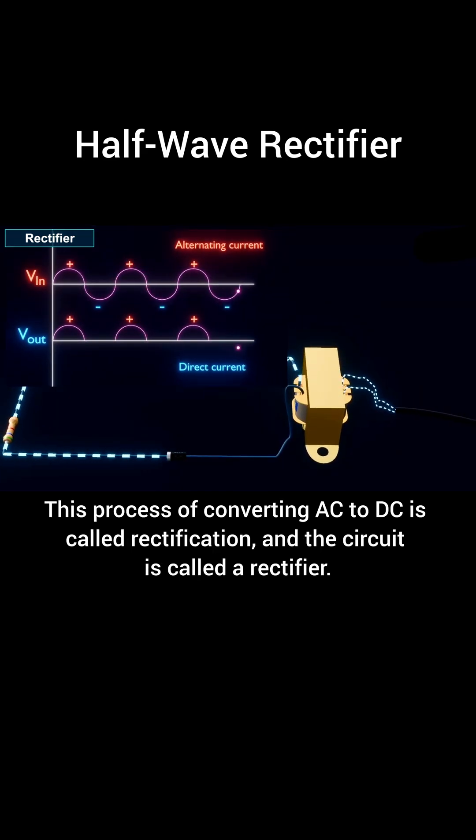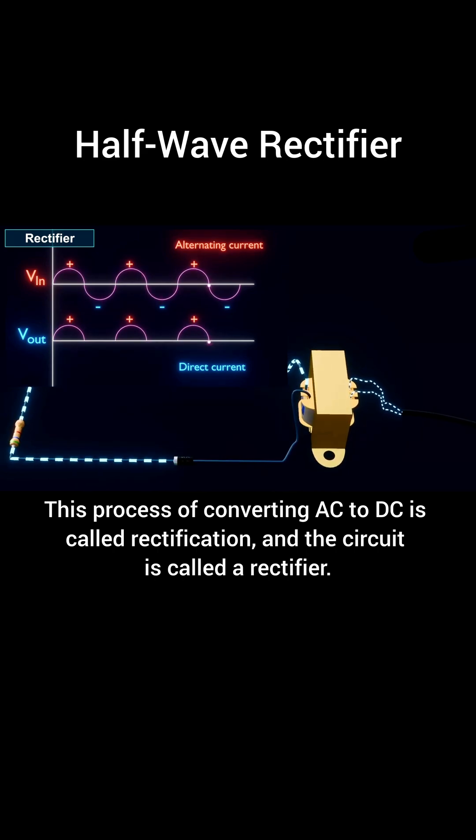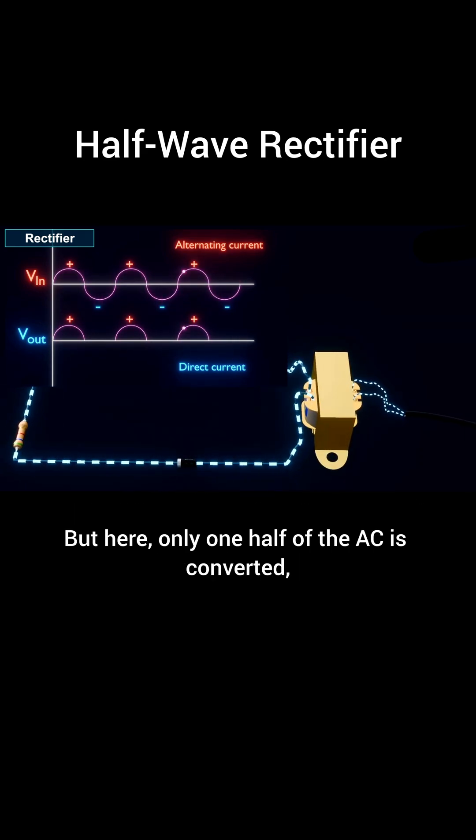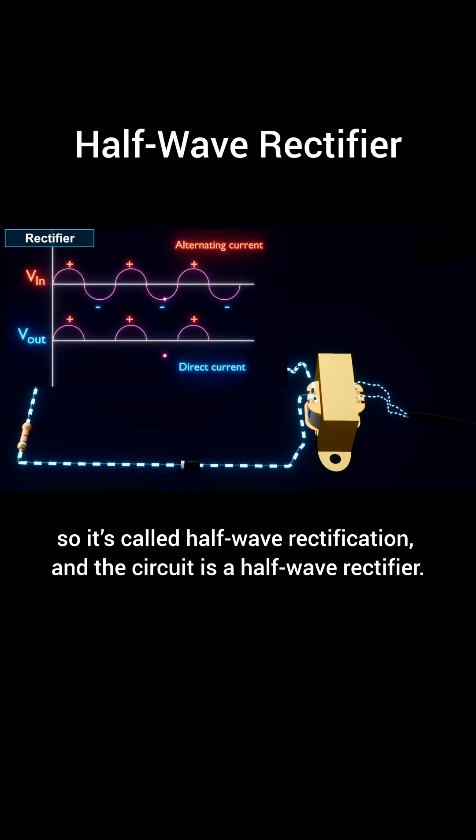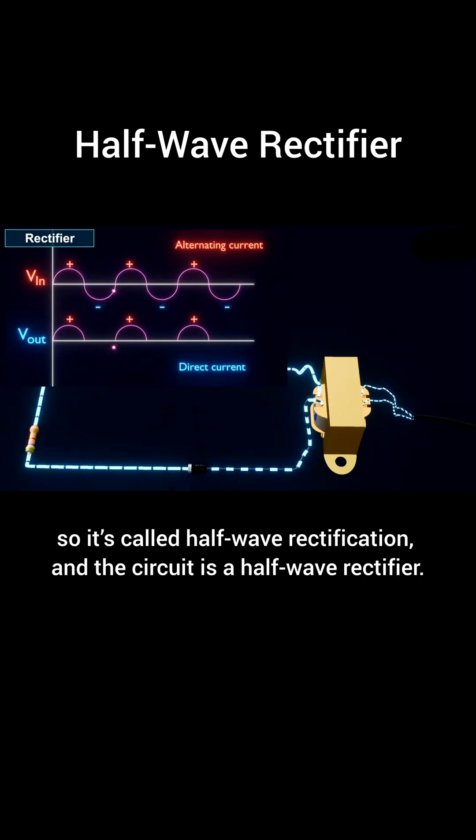This process of converting AC to DC is called rectification, and the circuit is called a rectifier. But here, only one half of the AC is converted, so it's called half-wave rectification and the circuit is a half-wave rectifier.